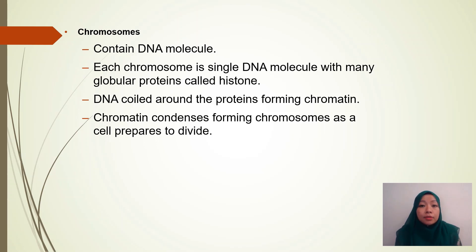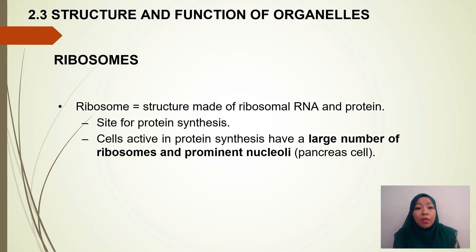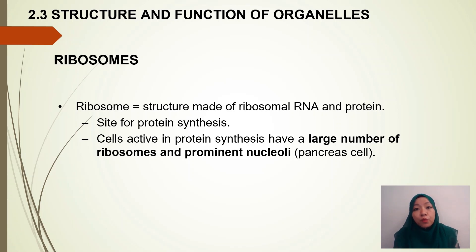Another organelle in this chapter is the ribosome. The ribosome structure is made of ribosomal RNA and protein, so ribosomes are composed of RNA and protein. This is the site for protein synthesis. Cells active in protein synthesis will have a large number of ribosomes and a prominent nucleolus. For example, pancreatic cells are active cells and will have a huge number of ribosomes.